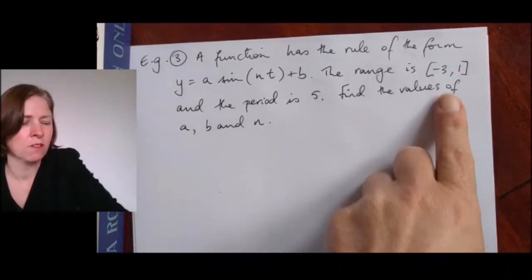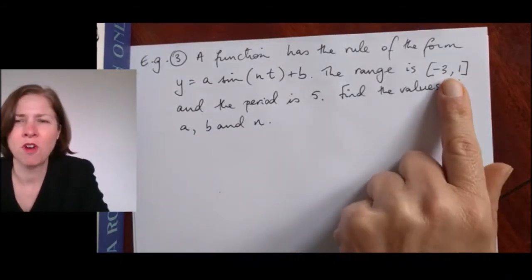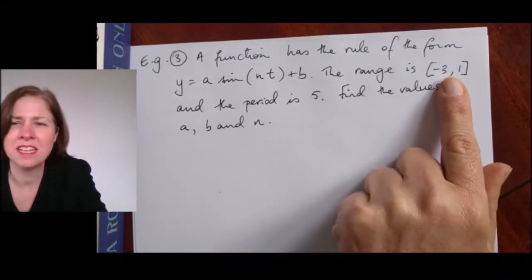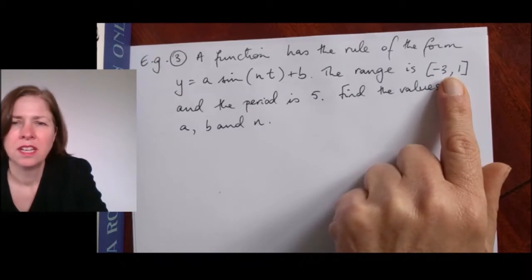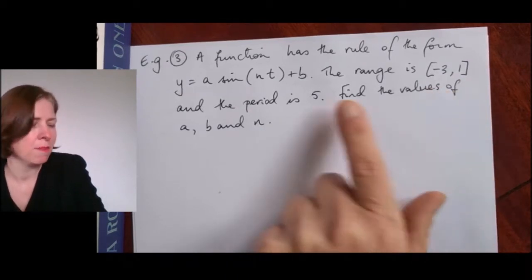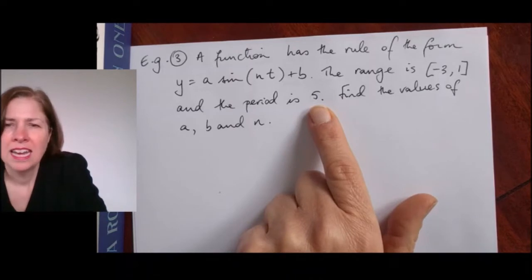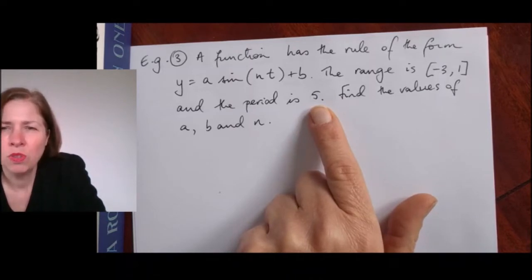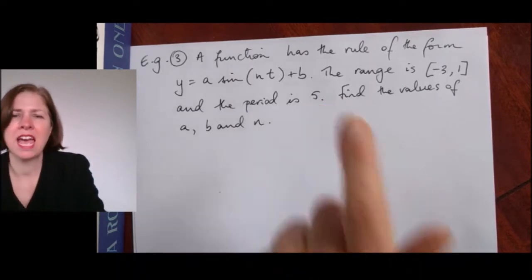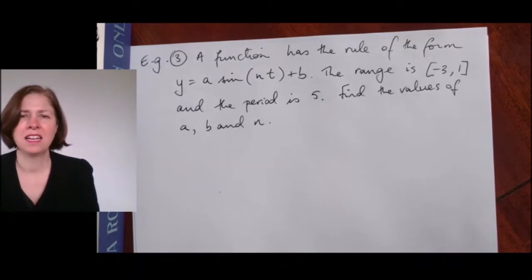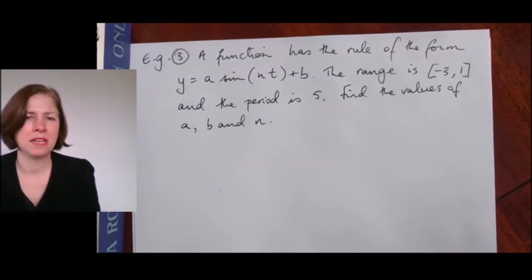However, looking a little bit further I can see that there definitely is a dilation, and my period is five — there's a horizontal dilation as well. Now I just need to use all the information given to work out a, n, and b.